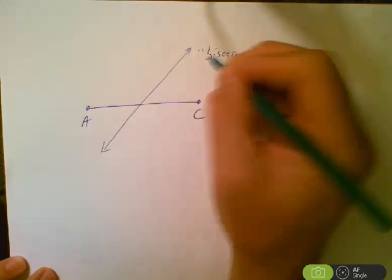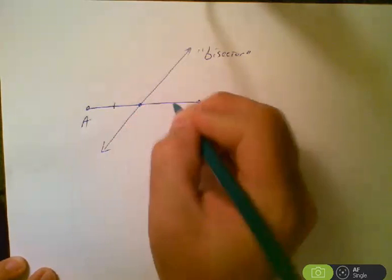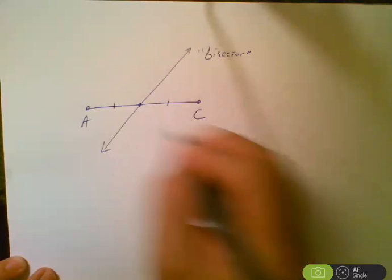If it's a bisector for this segment, that means it cuts the segment perfectly in half. So this little piece from here to here is the same as this little piece from here to here. Let's call that B.